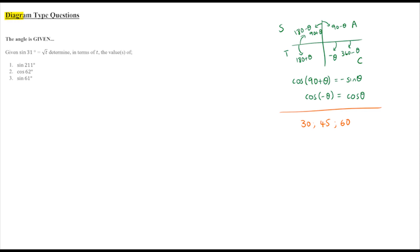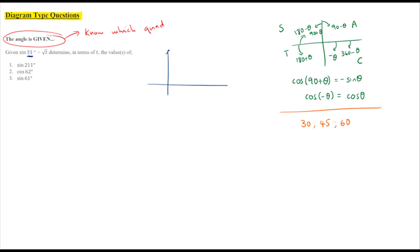For diagram-type questions there are two types. The first is where the angle is given. If the angle is given, we know which quadrant it's in, so we can draw our diagram straight away. For example, 31° is in the first quadrant.